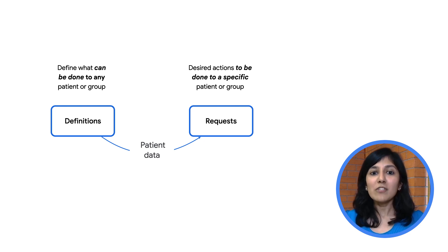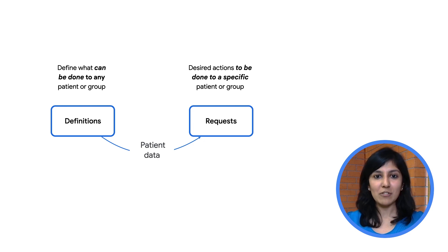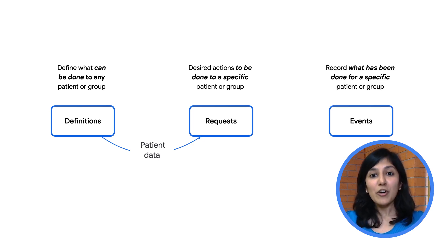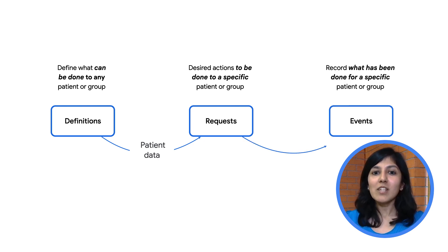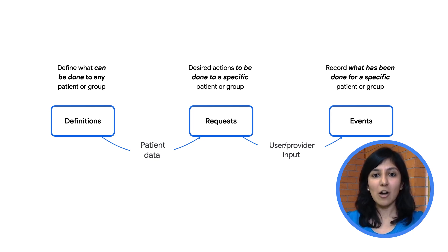As an example, the Plan Definitions Apply operation is used to generate these recommendations for the specific patient. The third category is events, which are resources that describe things that have been done, such as immunization, communication, condition, encounter, and episode of care. One of the goals of the Workflow library is to simplify the implementation of this pattern.